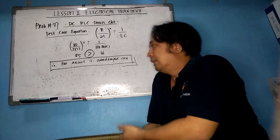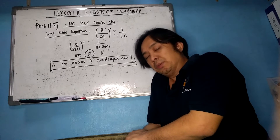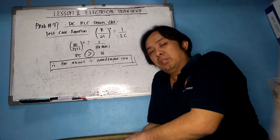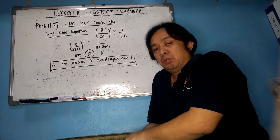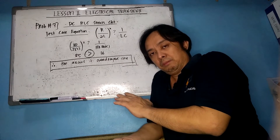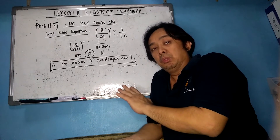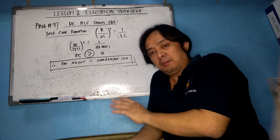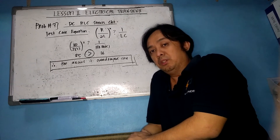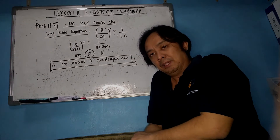As you can see, problems on DC transients are very simple as long as you know the principles, the formulas, and how they apply. Our next lesson is on AC circuits or alternating circuits. Don't forget to subscribe to the channel, and thank you very much for all of your support.